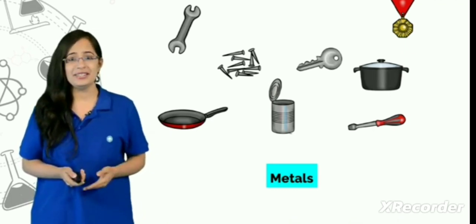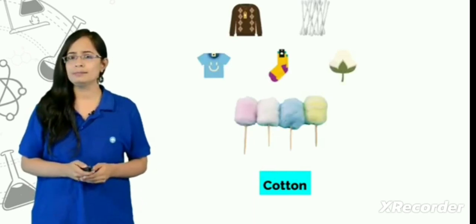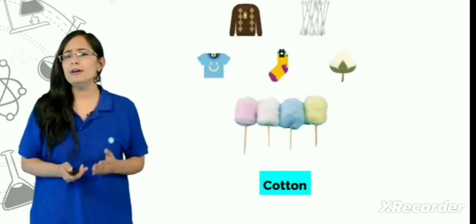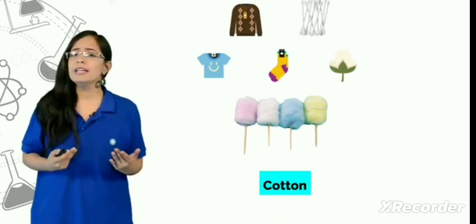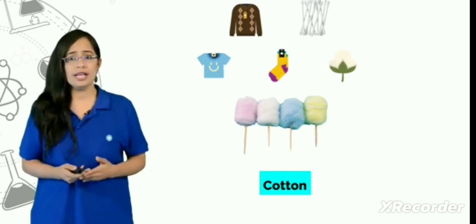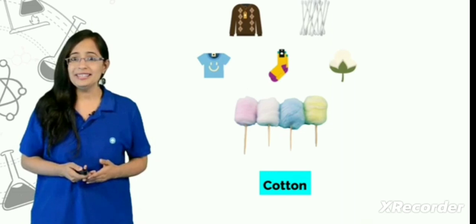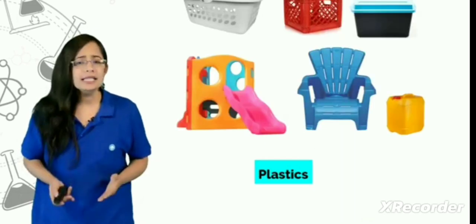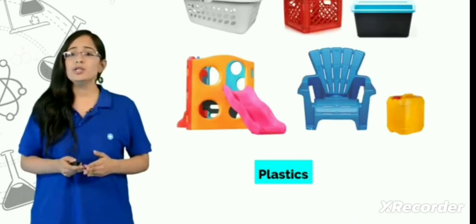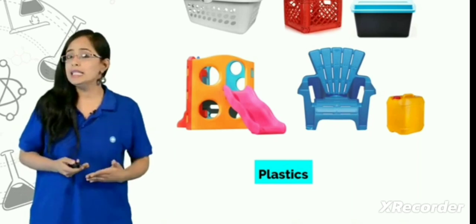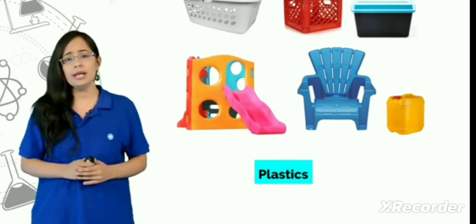Another important material is cotton. Cotton is a soft and fluffy fiber which is again used to make various kinds of objects present in our nature. Apart from it, plastic is also a very important material because of its ability that it can be molded into various kinds of shapes.